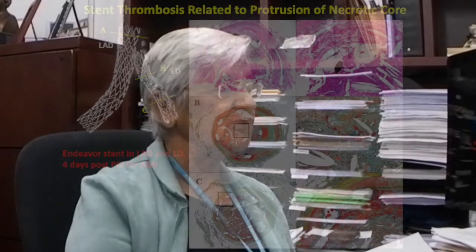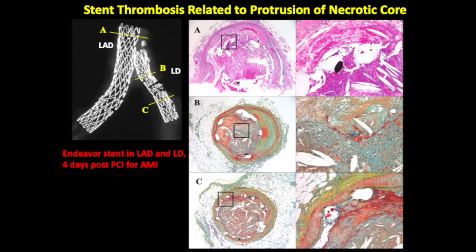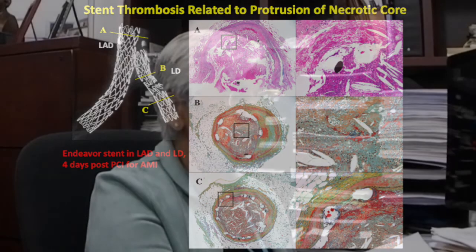You can also get protrusion of a necrotic core into the lumen. Here is a patient who had an Endeavor stent implanted in the left anterior descending and diagonal branch four days post-PCI for acute myocardial infarction. The necrotic core is protruding into the lumen and that led to thrombus formation.